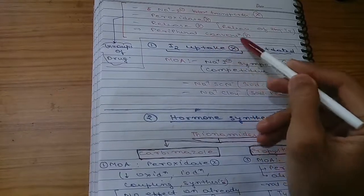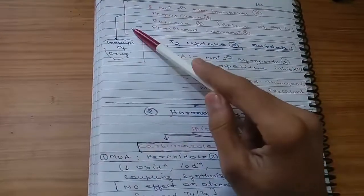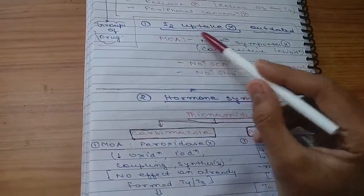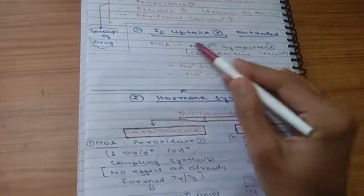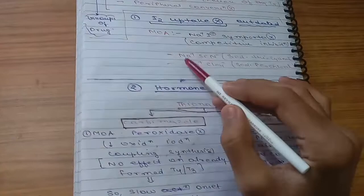We will mainly give drugs which are targeting this transporter, or peroxidase enzyme, or there will be inhibition of release, or inhibition of peripheral conversion. First, coming to the iodine uptake inhibitors, these are outdated drugs.